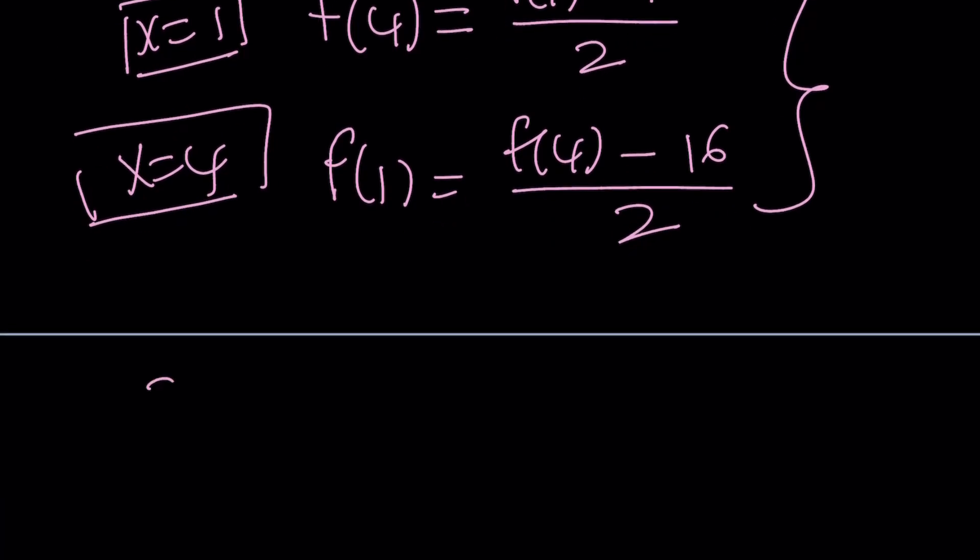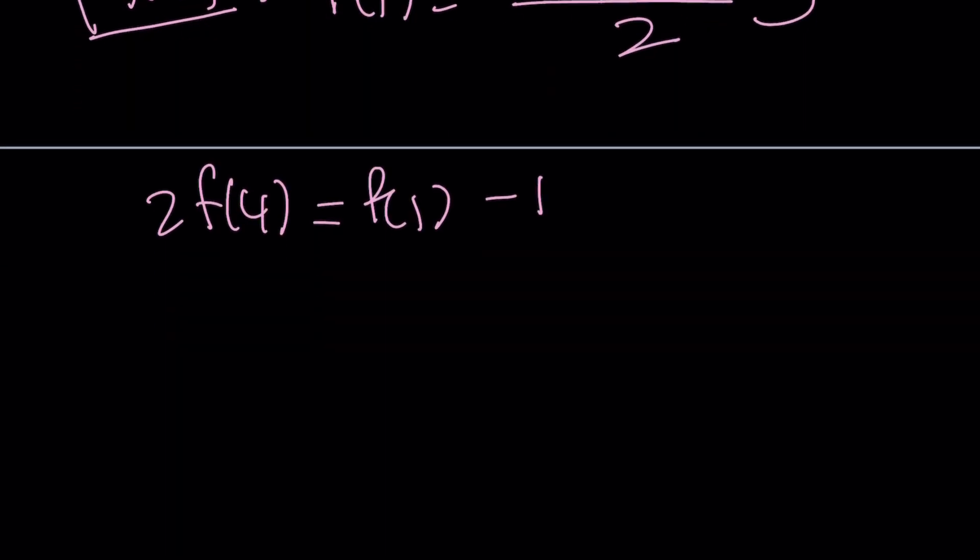So the first one is going to give us 2f of 4 equals f of 1 minus 1. And then the second one is going to give me 2f of 1 equals f of 4 minus 16.